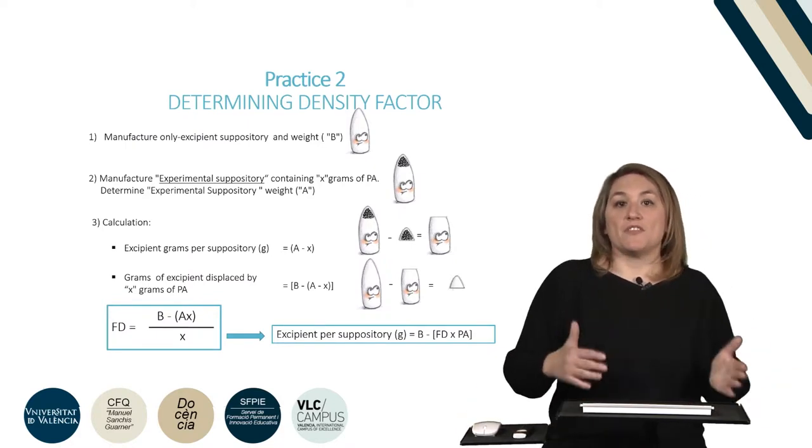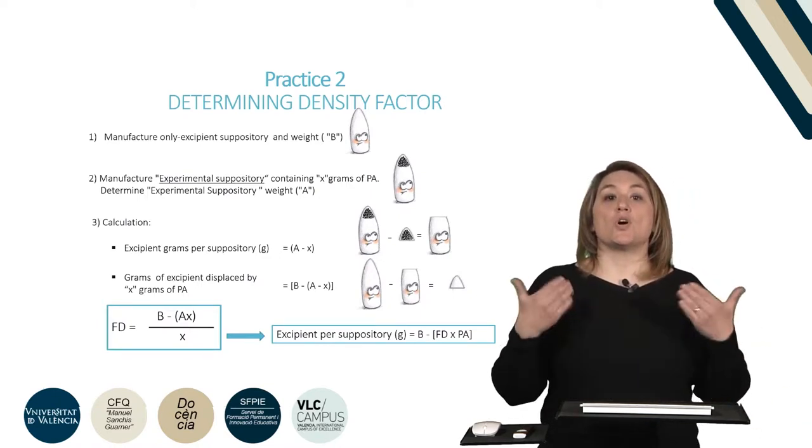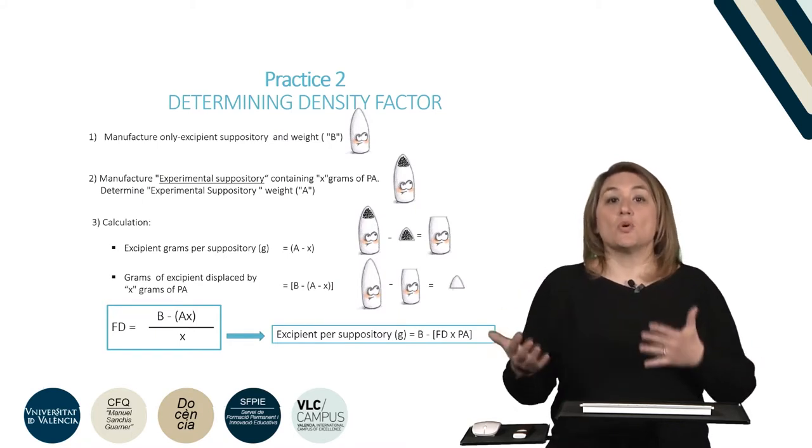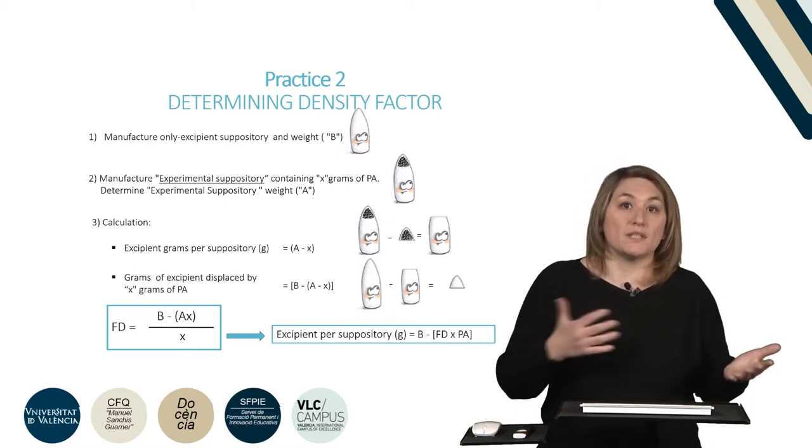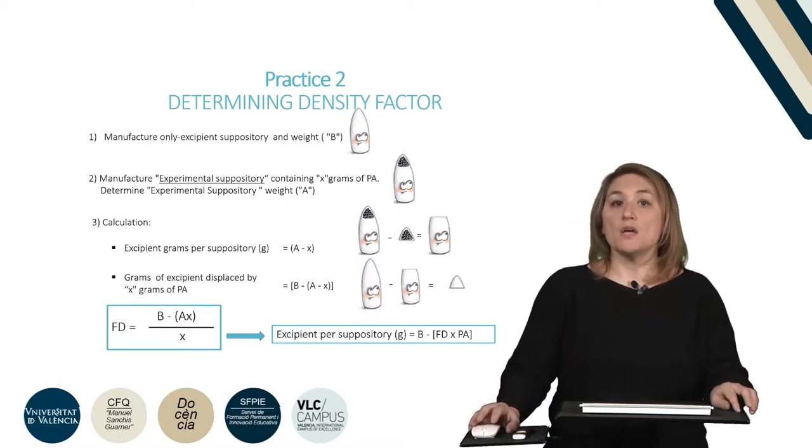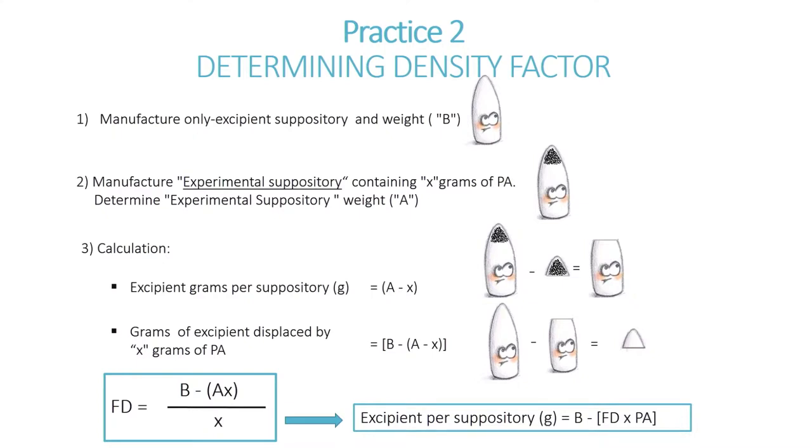If drug and excipients have the same density, the grams of displaced excipients will be the same as those of the added drug, since those grams would occupy exactly the same volume. In practice, it is known that densities are very different. So, the density factor is defined as grams of excipients displaced by one gram of active ingredient. In this practice, we will learn how to calculate the density factor of massa esterium and copper sulfate. To do this, we will carefully follow the steps summarized in the presentation.